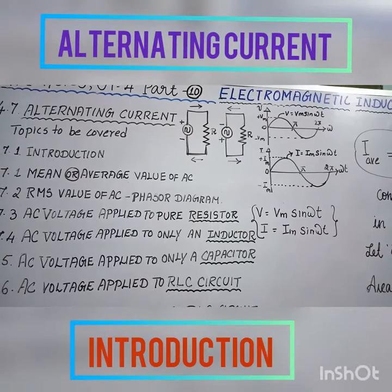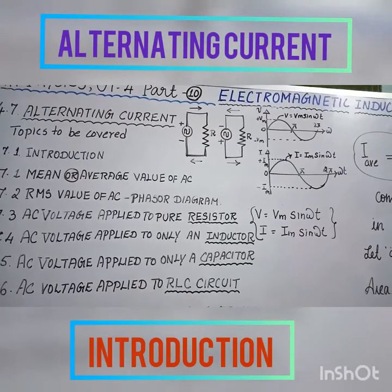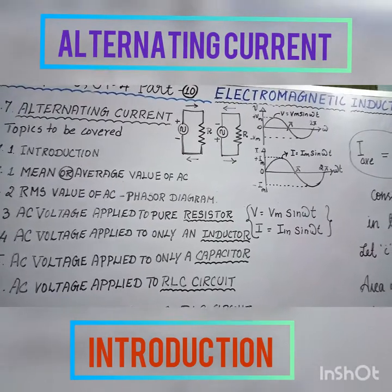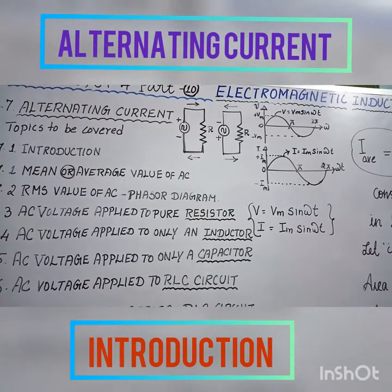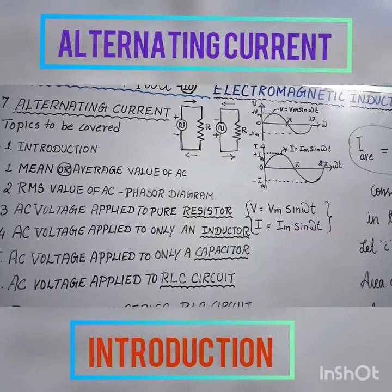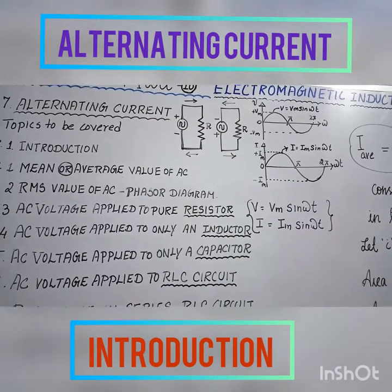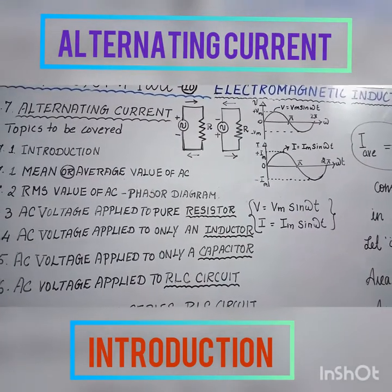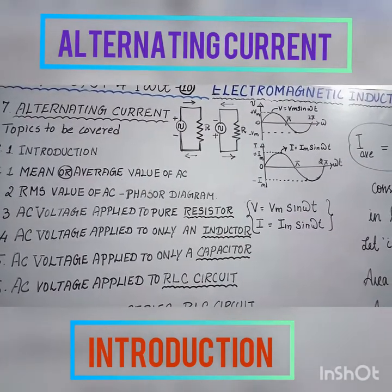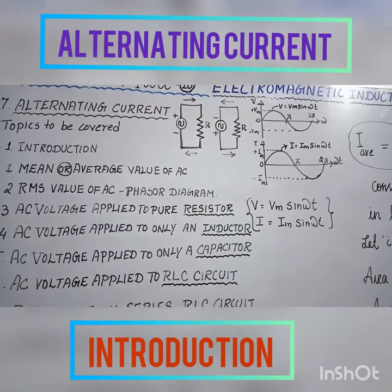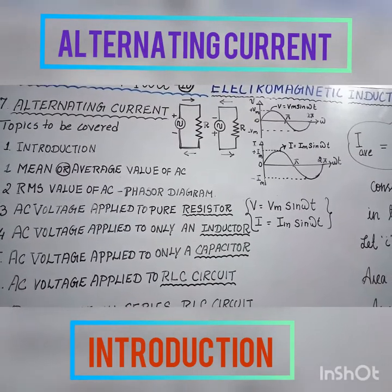Alternating current is the current that varies like the sine function with time. There are many applications of alternating current which we see around ourselves: radio, televisions, cars, transformers, and more. Some of those applications are used in all houses.